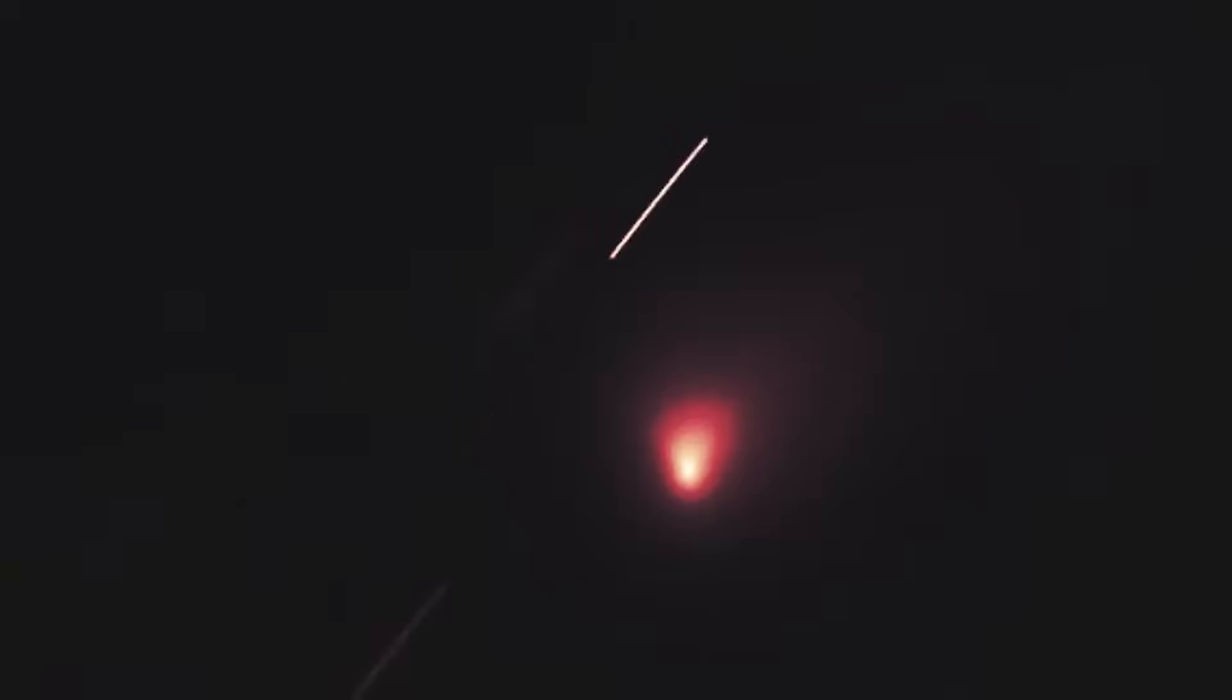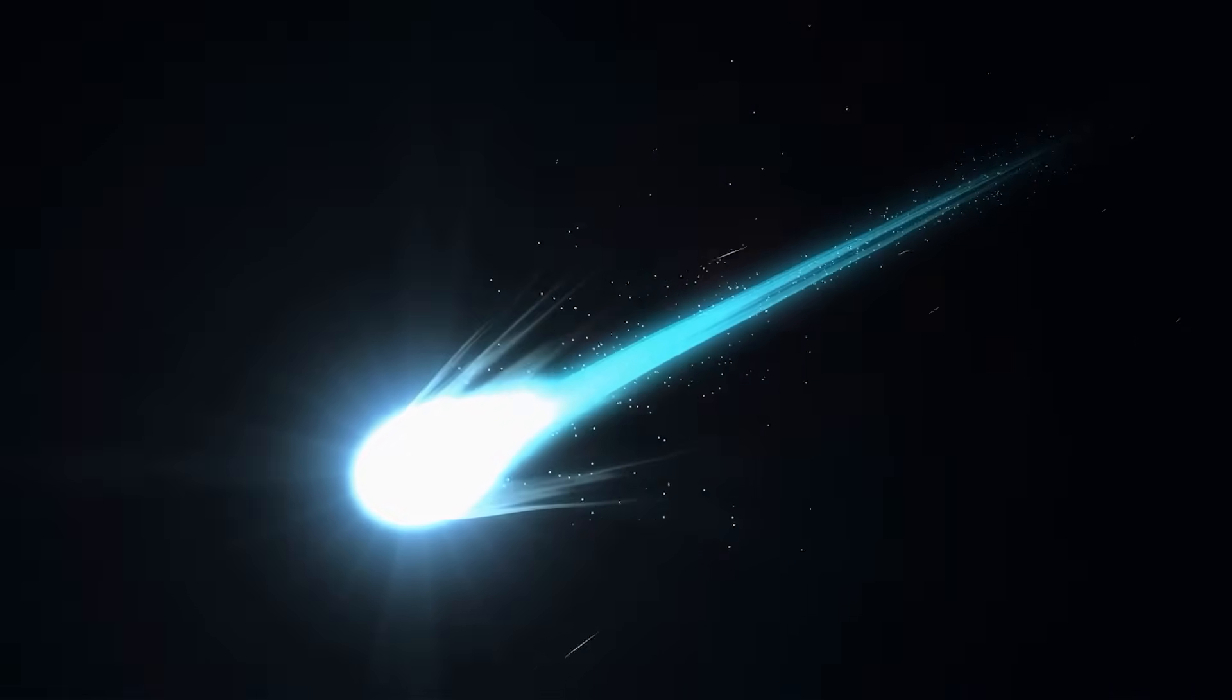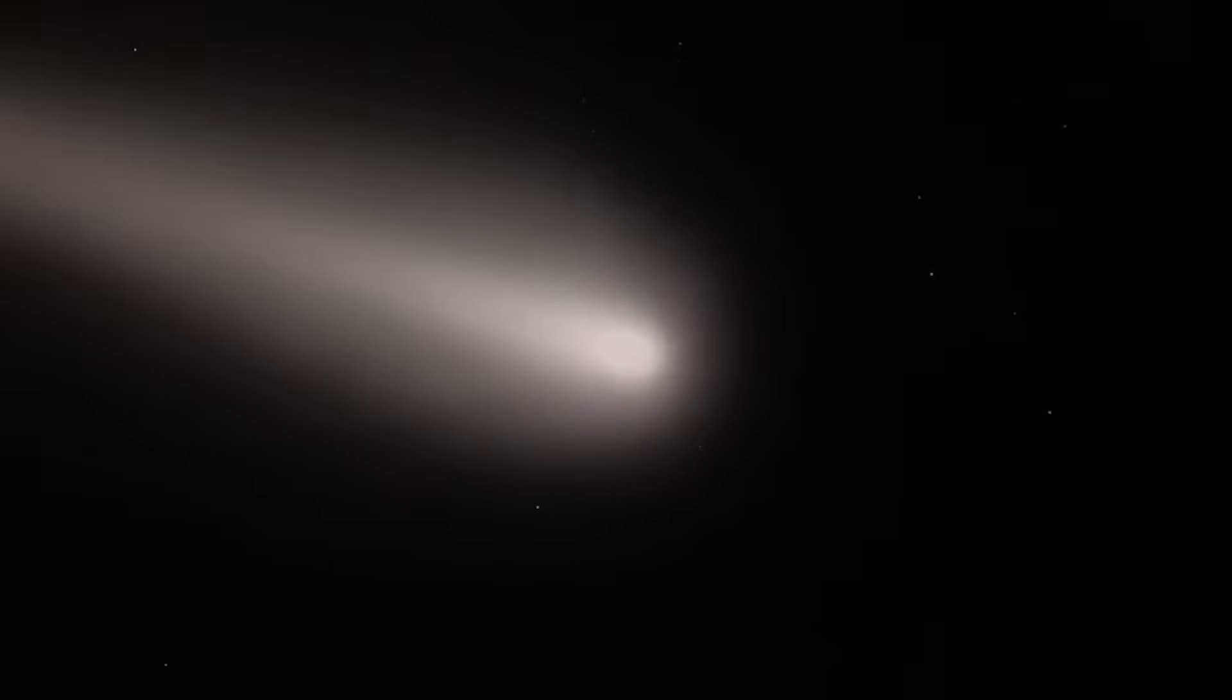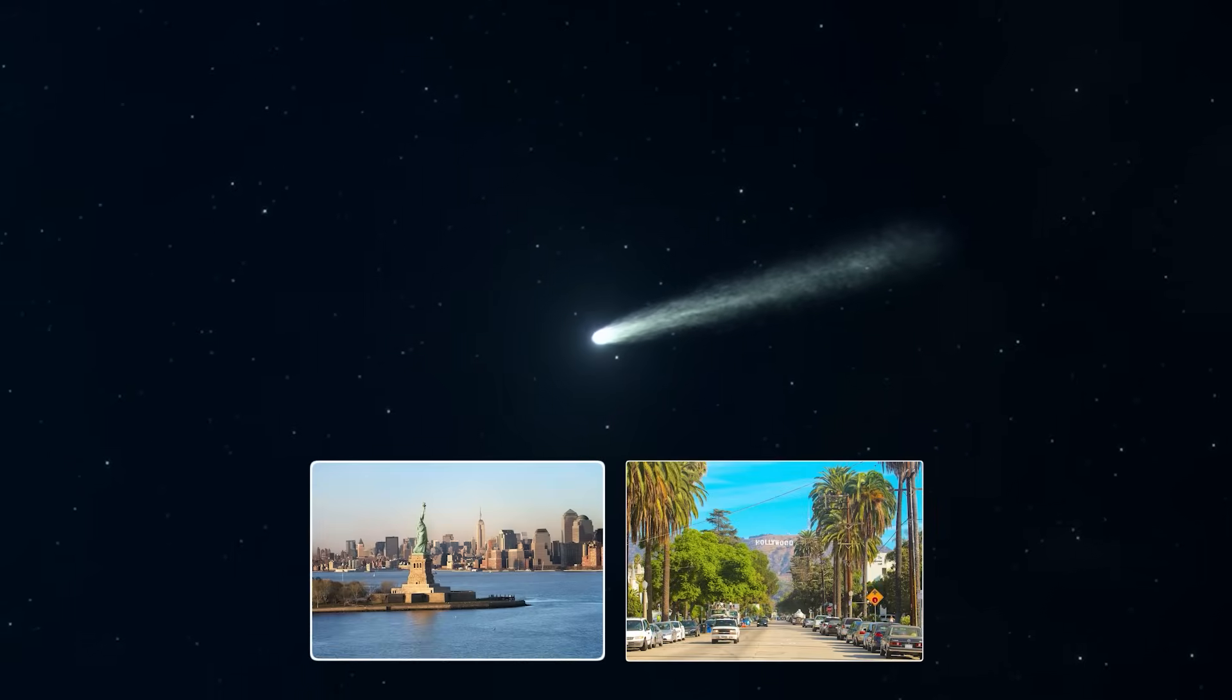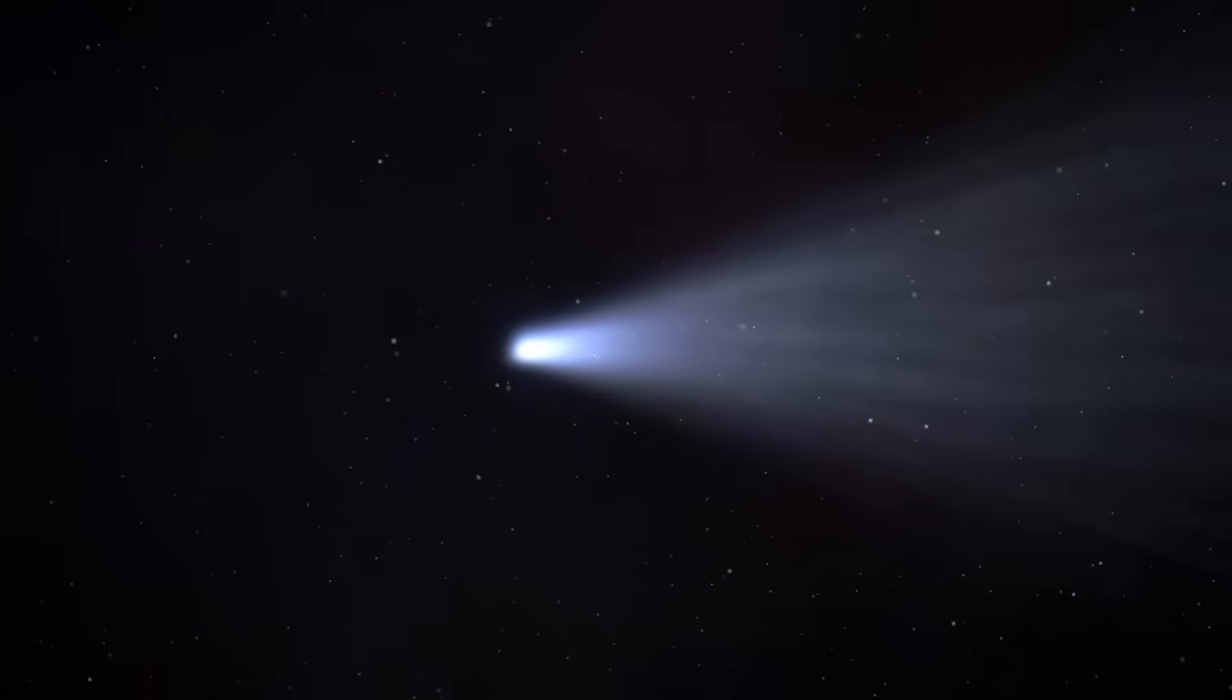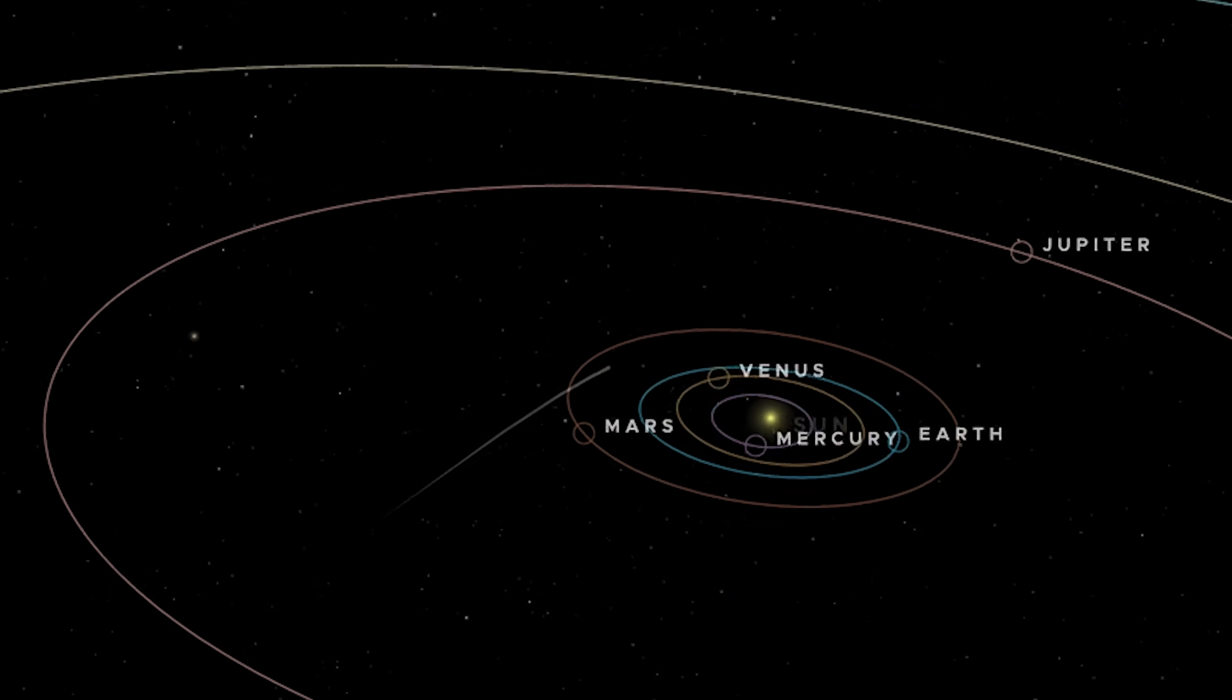This object, later named 3i Atlas, was moving at a mind-bending 130,000 miles per hour. That's over 36 miles every single second. To give you some perspective, that's fast enough to travel from New York to Los Angeles in under two minutes. This wasn't the leisurely arc of a comet born in our own system. This was the trajectory of an outsider, a visitor from interstellar space.